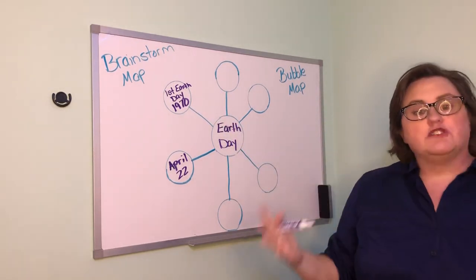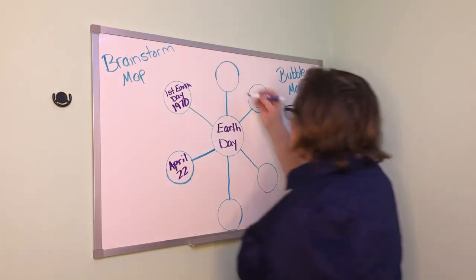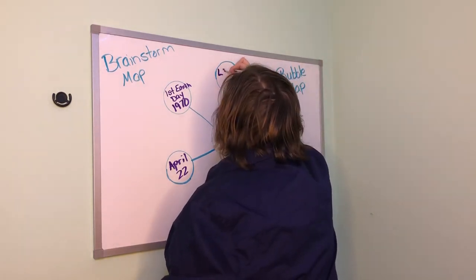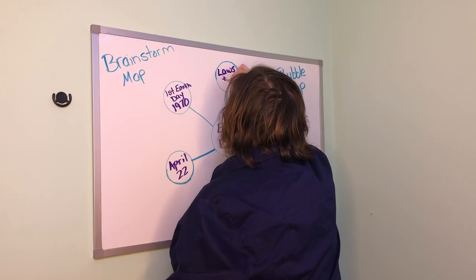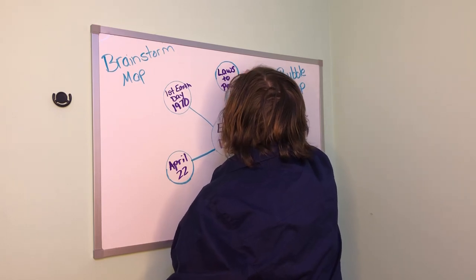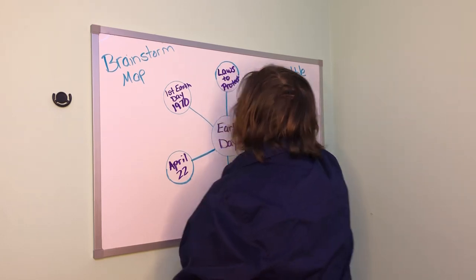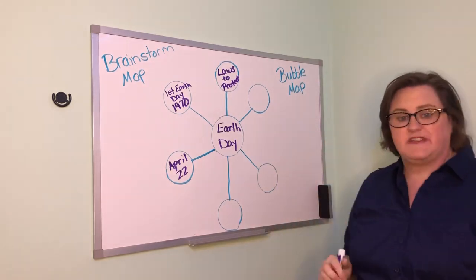What's next? There are laws to protect the environment. So I'm going to say laws to protect. Again, it's not complete sentences. Laws to protect is good enough.